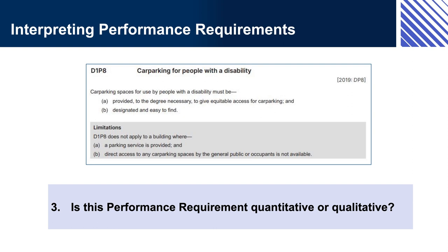If this performance requirement were quantitative, it might have specified a certain number of disabled car parks as being required, depending on something like the number of people expected to live, work, or visit the building.